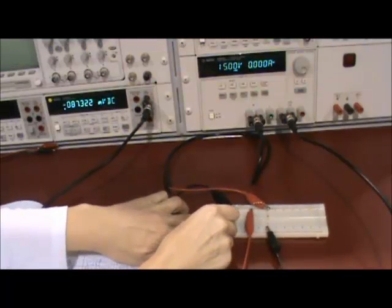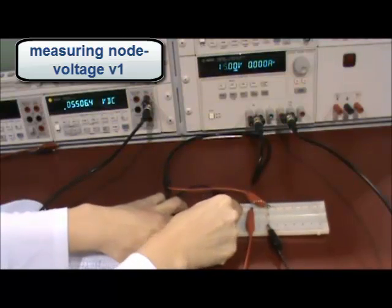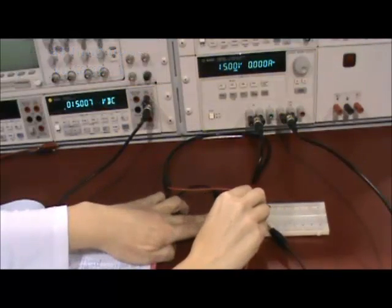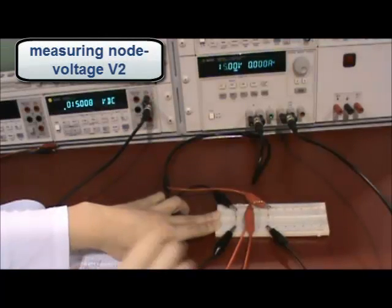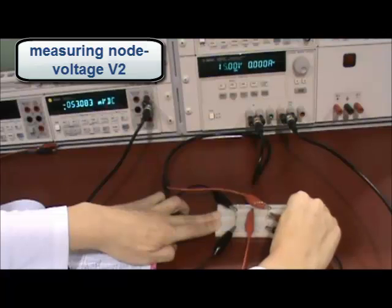For example, a node voltage is always measured with respect to the ground node. So place the red lead at the node that you're measuring and place the black lead at the bottom node which is marked as the reference or the ground node in the schematic.